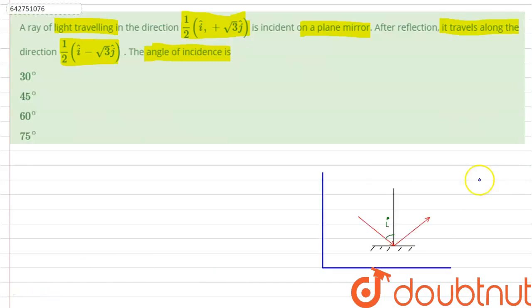As we can see that only the y component changes, therefore the normal of the plane of the mirror is along with j cap. Therefore, the angle of incidence is the angle between the unit vectors (1/2)i cap plus root 3 j cap and j cap.